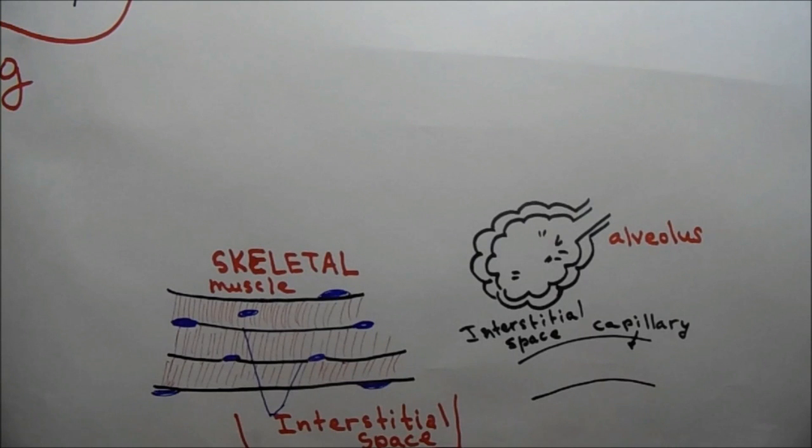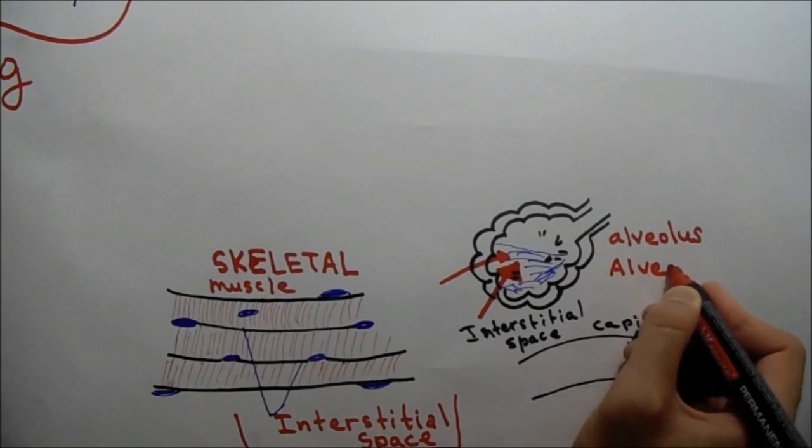If the right ventricular failure progresses, the fluid starts going to the alveoli and alveolar pulmonary edema develops.